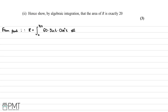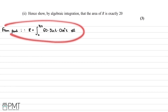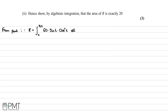In the second part of part (a), we're asked to show by algebraic integration that the area of R is exactly 20. We take the integral from part (a) and use integration techniques to solve it. The first step is to pull out the constant 60 from the integral, keeping the same limits, leaving us with sin(t) multiplied by cos²(t). To integrate, we want to express cos²(t) in terms of sin(t).